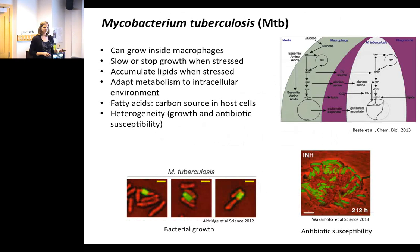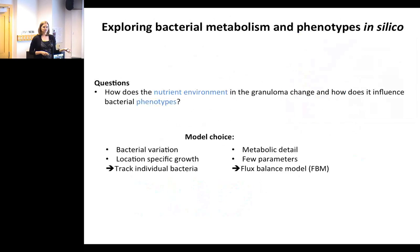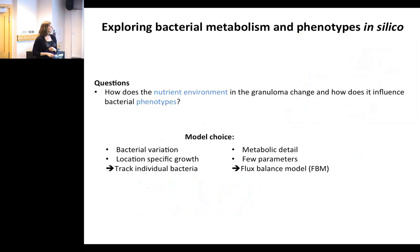We want to look at the nutrient environment of the granuloma and how it affects bacterial phenotypes. The model choice has two components. First, we want to capture bacterial variation, so we need to build bacteria into the model as agents, rather than continuous variables on the grid. Second, we want a model with metabolic detail and few parameters — because a metabolic network has many metabolites and reactions, and we don't want to fit parameters for all of them. Flux balance models are a good way to capture a large metabolic network without all the rate parameters.